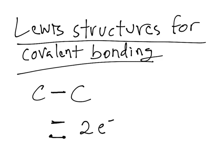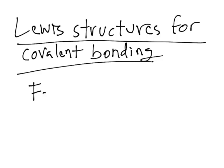Drawing Lewis structures for covalent bonds is a little bit trickier than for ionic bonds, but it's not hard — you just need a little bit of practice. A very important factor you have to take into account when drawing a covalent bond compound is formal charge.